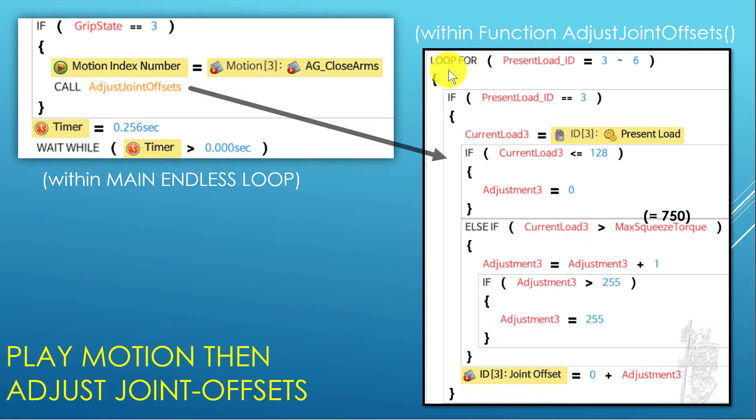That function actually analyzes four servos: servo 3, servo 4, servo 5, servo 6. I'm just showing the one for servo 3 here to show you the principle. When it's processing servo number 3, it reads the present load and saves it as current load 3. If that current load is less than 128, no adjustment needs to be made. That means it's still moving in the air, it hasn't closed up on the object yet.